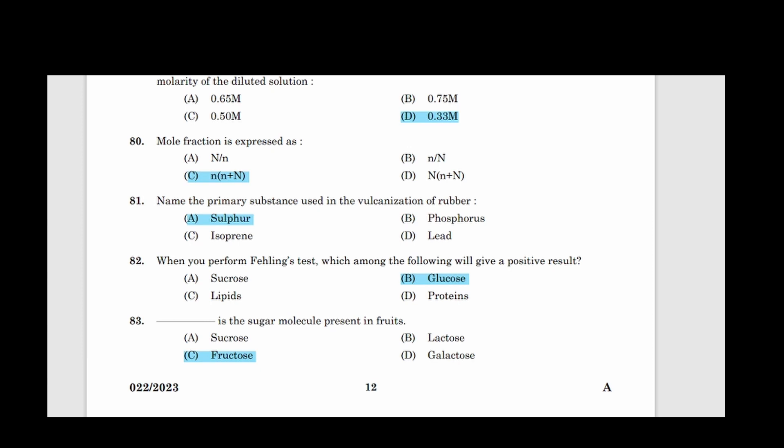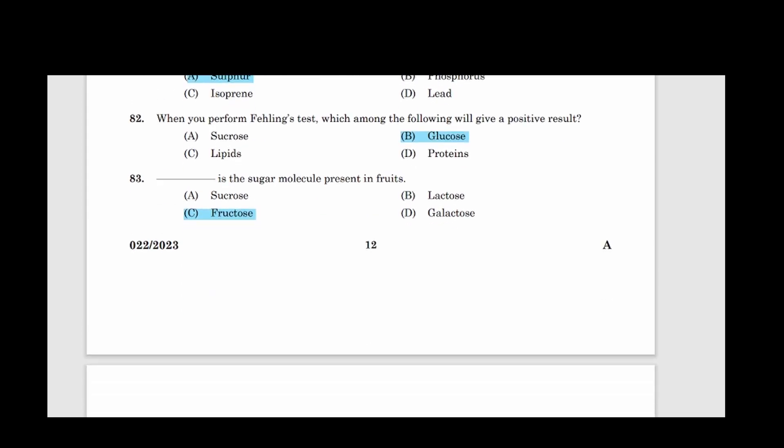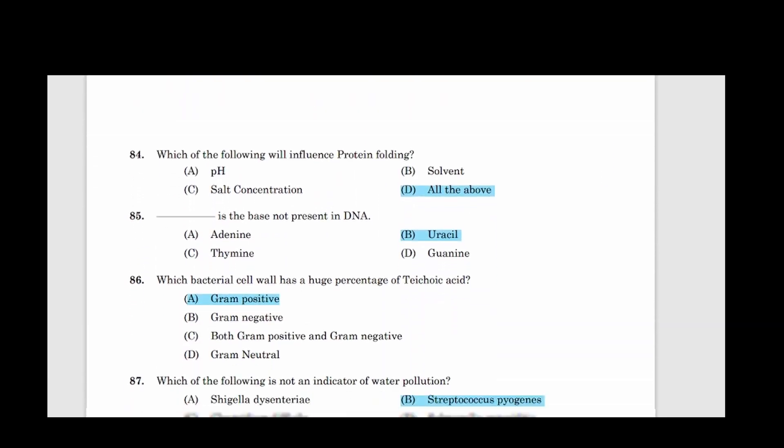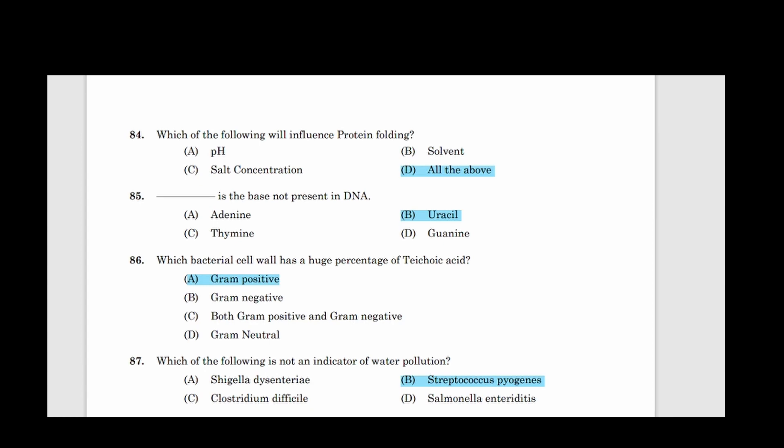81: Name the primary substance used in the vulcanization of rubber. Answer option A, Sulfur. 82: When you perform Fehling's test, which among the following will give a positive result? Answer option B, Glucose. 83: Dash is the sugar molecule present in fruits. Answer option C, Fructose. 84: Which of the following will influence protein folding? Answer option D, All the above. 85: Dash is the base not present in DNA. Answer option B, Uracil.